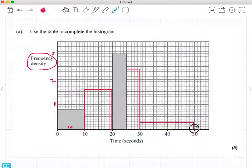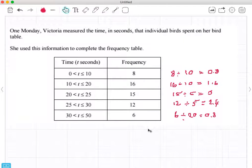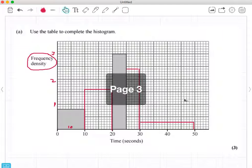So remember, no gaps between each bar. The area of the bar, 30 to 50, 20 times 0.3 represents the frequency, which is 6. So this is how you fill in a histogram from a frequency table by working out the frequency density and making sure that we use the height times the width to get the frequency.